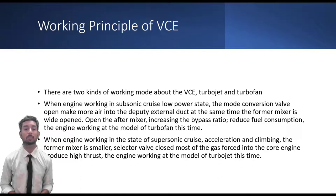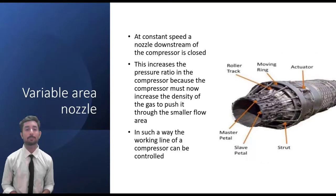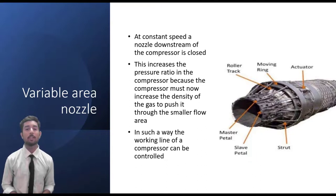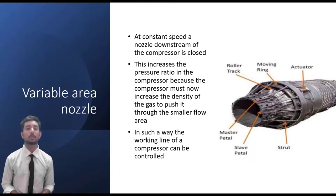When the engine is operating in supersonic use — acceleration and climbing — the forward mixer is smaller. The selector valve closes most of the gas ports into the core engine to produce high thrust, and the engine operates in turbojet mode. A variable nozzle helps adjust the exit pressure of the combustion gases to ambient pressure. When combustion gases leave the turbine, they still have remaining pressure which is converted into speed by the convergent contour of the nozzle, increasing the pressure ratio in the compressor since the compressor must increase gas density through the smaller flow area.